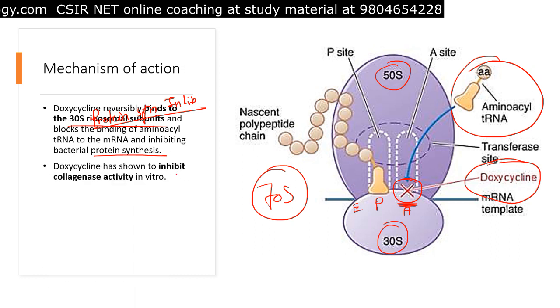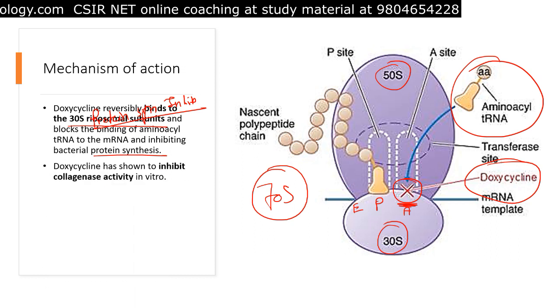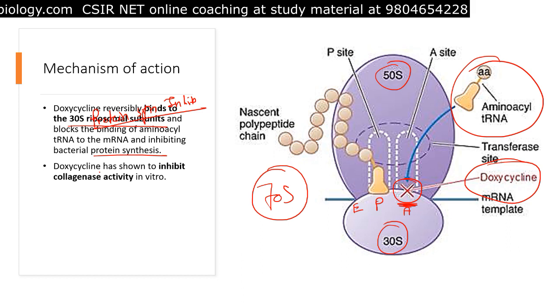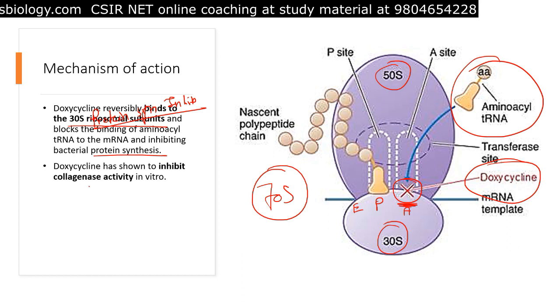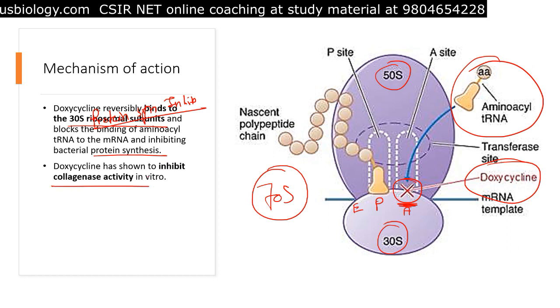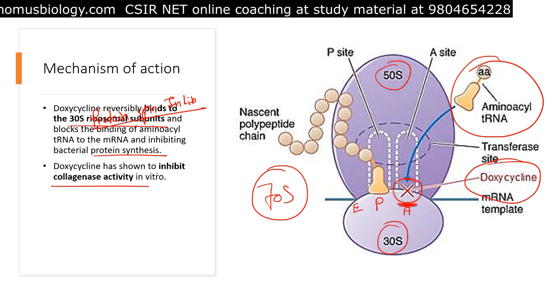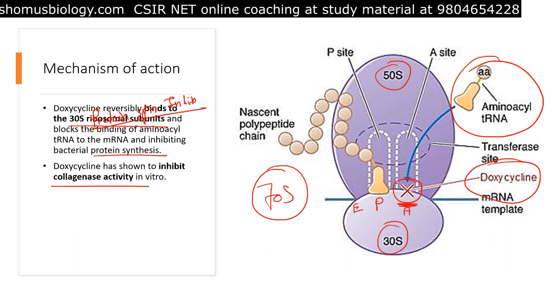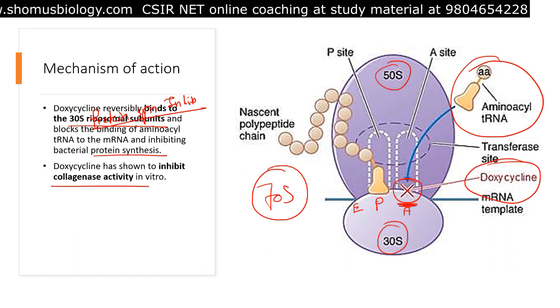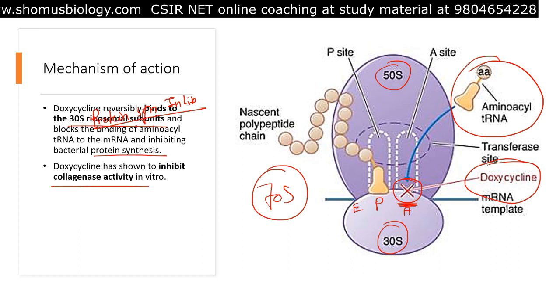It inhibits protein synthesis and is also found to inhibit collagenase activity in vitro. These are the two different mechanisms of action for doxycycline antibiotic.